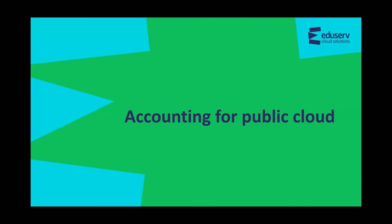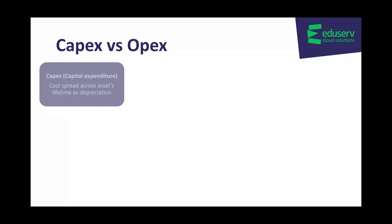That's a high level view of what cloud is. The main purpose of this webinar is to talk about the accounting implications for public cloud. We often hear that the finances and accounting concepts around moving to public cloud can be a blocker, and there's a huge lack of understanding. So let's start with what is CAPEX and what is OPEX. CAPEX is capital expenditure — this is usually where you're buying an asset that's going to last over a year and has a significant value. Organizations have different policies on the CAPEX threshold, but many use £5,000 with a useful life of over a year. You put the cost to the balance sheet and then spread the cost across the asset's lifetime as depreciation.